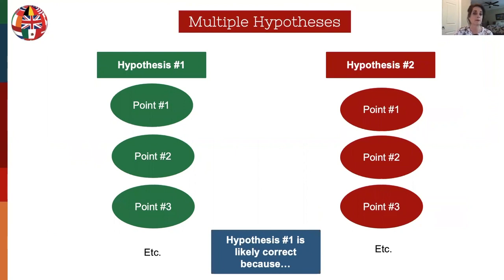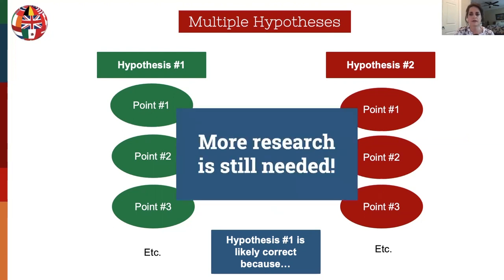The last technique is multiple hypotheses. This works well when sorting out people of the same name or when the conclusion is not yet very clear. I use this technique most often in research reports for clients when more research is still needed — it helps get things organized so the client can see what has been done. Basically, you list hypothesis one and make all the points about that, then list hypothesis two and make those points, and if possible make a statement that either hypothesis one or hypothesis two is correct because of such and such.